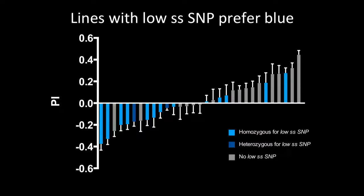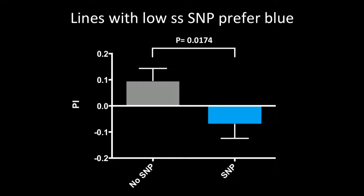The lines that are homozygous for the low spineless SNP are in light blue, and they tend to have a negative PI, suggesting that they prefer blue light. This is shown again, just in a different representation. There's a significant difference between lines that do and do not contain a SNP in terms of their visual preference.